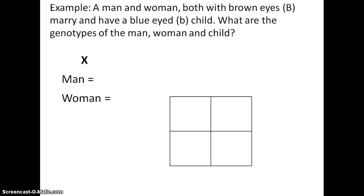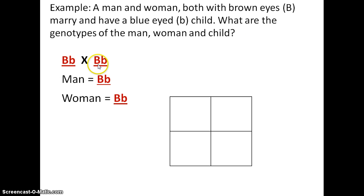Here's another example: a man and a woman, both with brown eyes, marry and have a blue-eyed child. What are the genotypes of the man, woman, and child? The only genotype we're positive of based on phenotype alone is the child's — to be blue-eyed, you must be homozygous recessive. The only way that could happen is if both parents contributed a recessive allele, and since parents are also brown-eyed (at least one dominant allele each), they must both be heterozygous. You'd prove this by making a Punnett square.